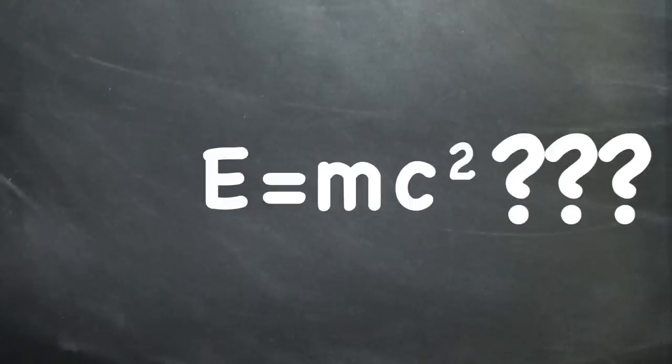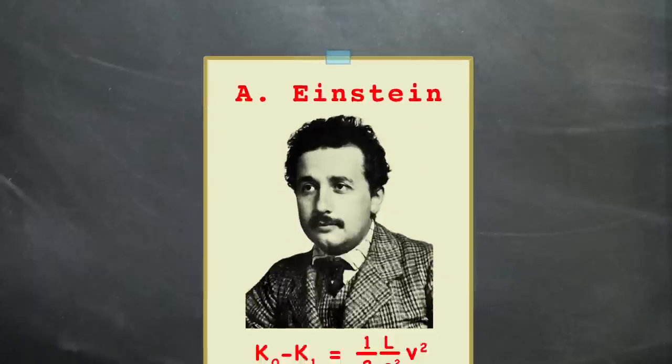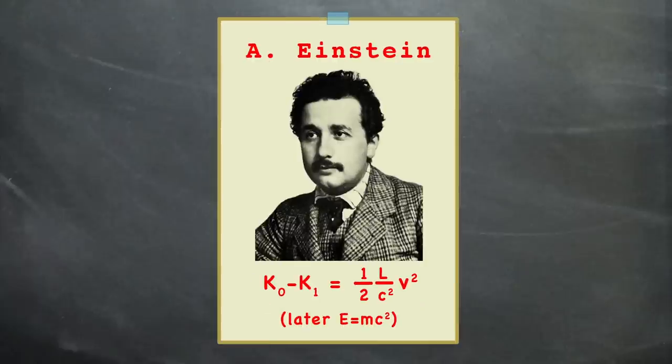So, back to E equals mc squared. Why is it a thing? Believe it or not, our relationship between mass and energy was well known before special relativity. In fact, there were several derivations of what look extremely similar to Einstein's equation.